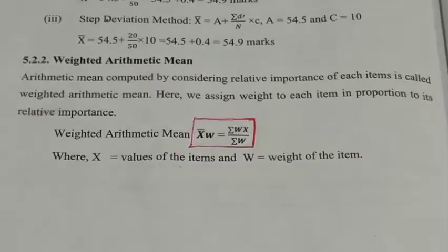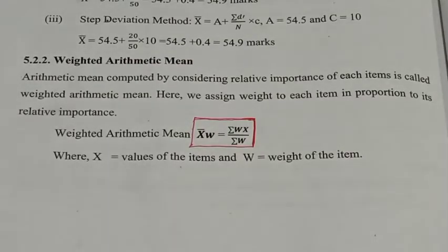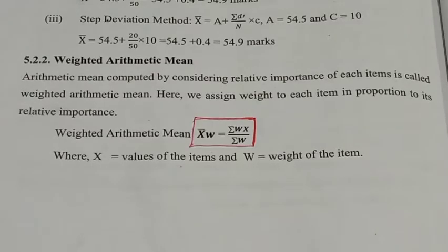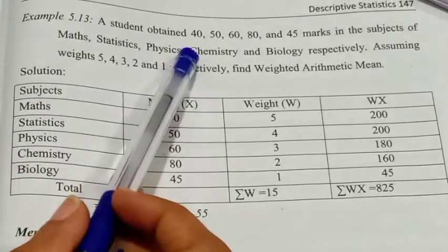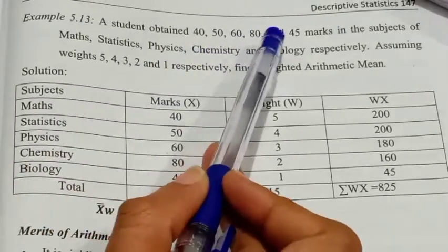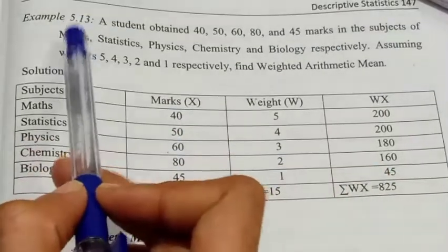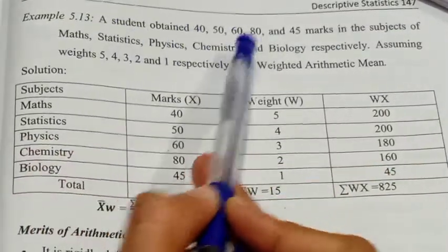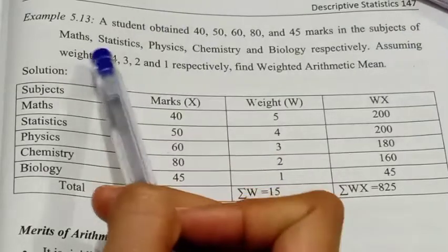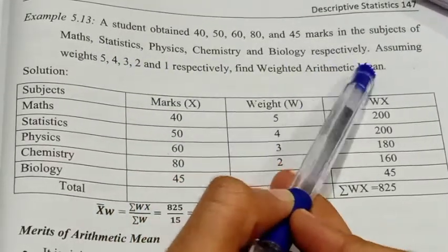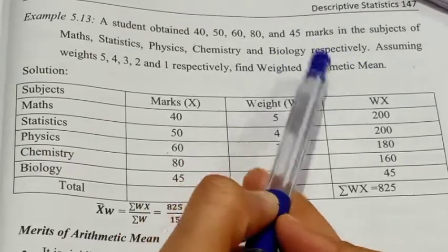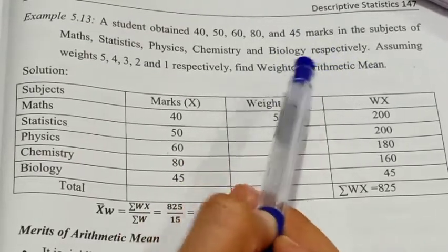Next is the Weighted Arithmetic Mean. The Weighted Arithmetic Mean equation is: x̄w equals sigma wx divided by sigma w. A student obtained 40, 50, 60, 80, and 45 marks in the subjects of Maths, Statistics, Physics, Chemistry, and Biology respectively, with weights 5, 4, 3, 2, and 1 respectively. Find the Weighted Arithmetic Mean.